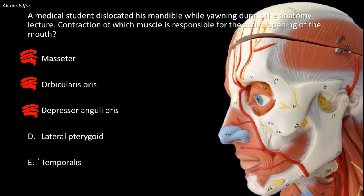The muscles that act on the mandible are called the muscles of mastication, and these are supplied by the mandibular division of the trigeminal nerve. They include masseter, temporalis, and the medial and lateral pterygoid muscles.